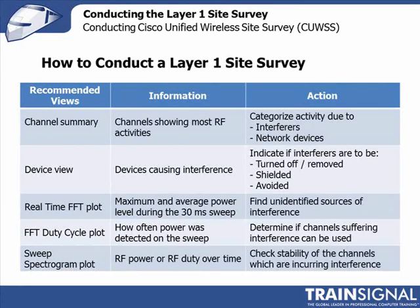Looking at the Cisco Spectrum Expert, some key features to use are first the channel summary, which is really good for seeing where most of the RF activity is. It gives a rough indication of where the interferers are and how much is due to network devices like other wireless LANs. You can then look at the devices view, which shows the devices actually causing the RF activity you're hearing in the channel summary — enabling you to start detecting what these devices are. There are also three spectrum plots which are of importance.